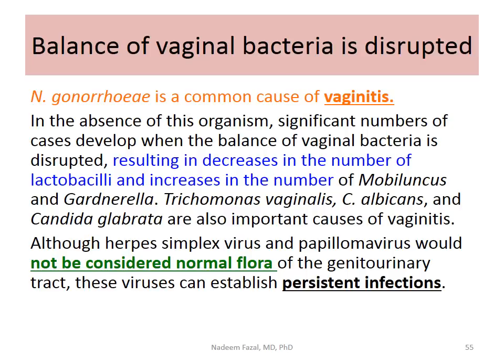When the precise balance of vaginal normal flora is disturbed, a significant number of cases develop. This results in a decrease in the number of lactobacilli, which are protective, and an increase in other bacteria like Mobiluncus, Gardnerella, Trichomonas vaginalis, Candida albicans, and C. glabrata — important causes of vaginitis.